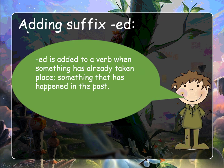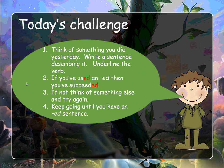Adding the suffix '-ed': '-ed' is added to a verb when something has already taken place, something that's happened in the past. Today's challenge is to think of something you did yesterday and write a sentence describing it. Underline the verb — if you've used an '-ed', then you've succeeded. If not, think of something else and try again. Keep going until you have an '-ed' sentence. A note for grown-ups: a lot of English verbs are irregular; we're just concentrating on the ones that you can add a straight '-ed' to.